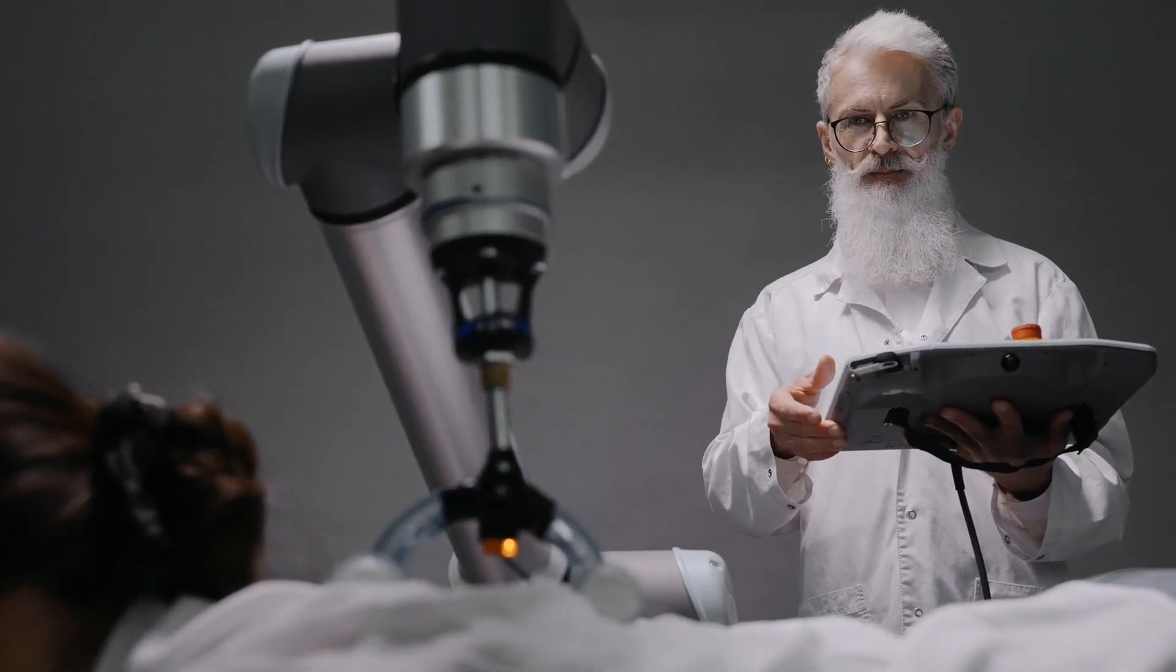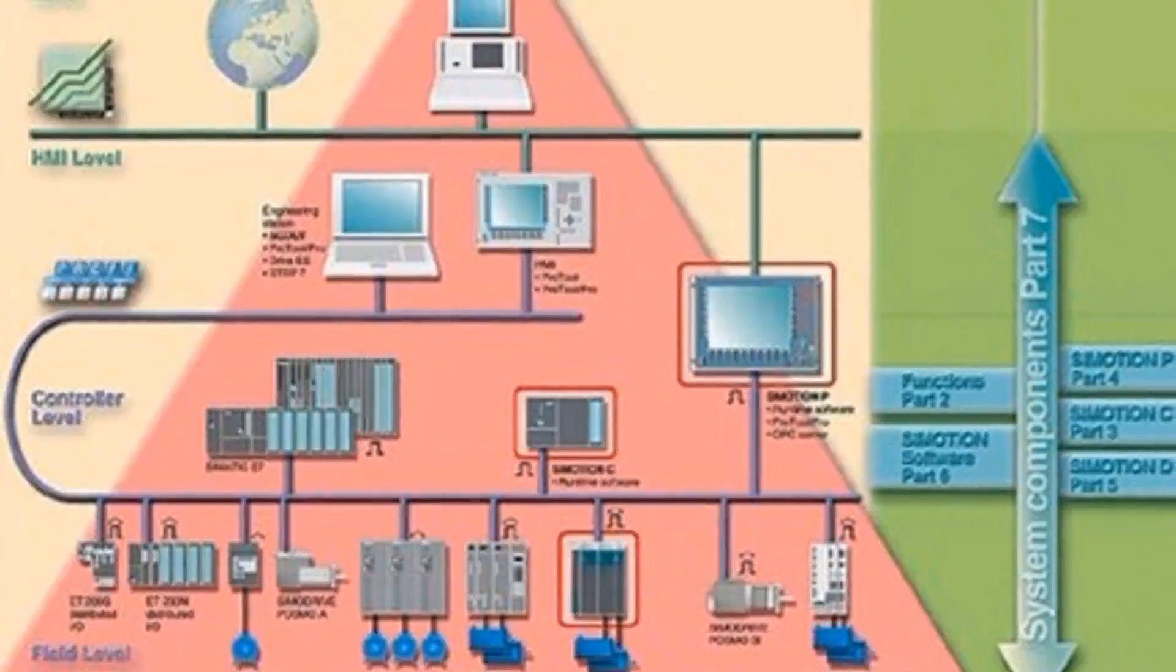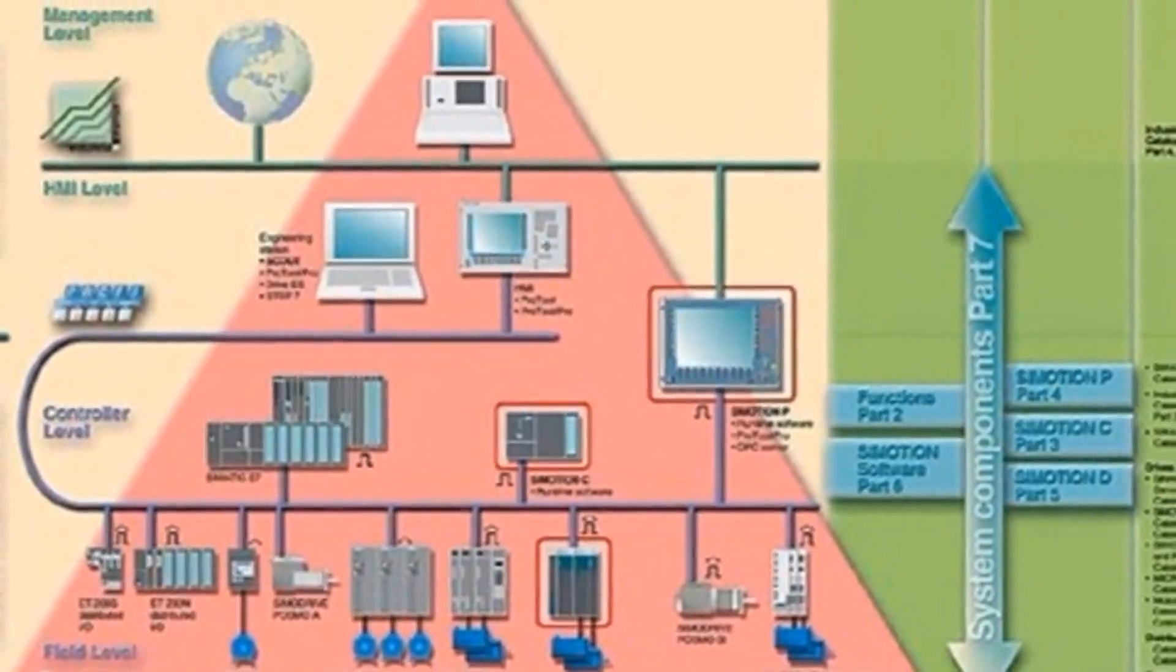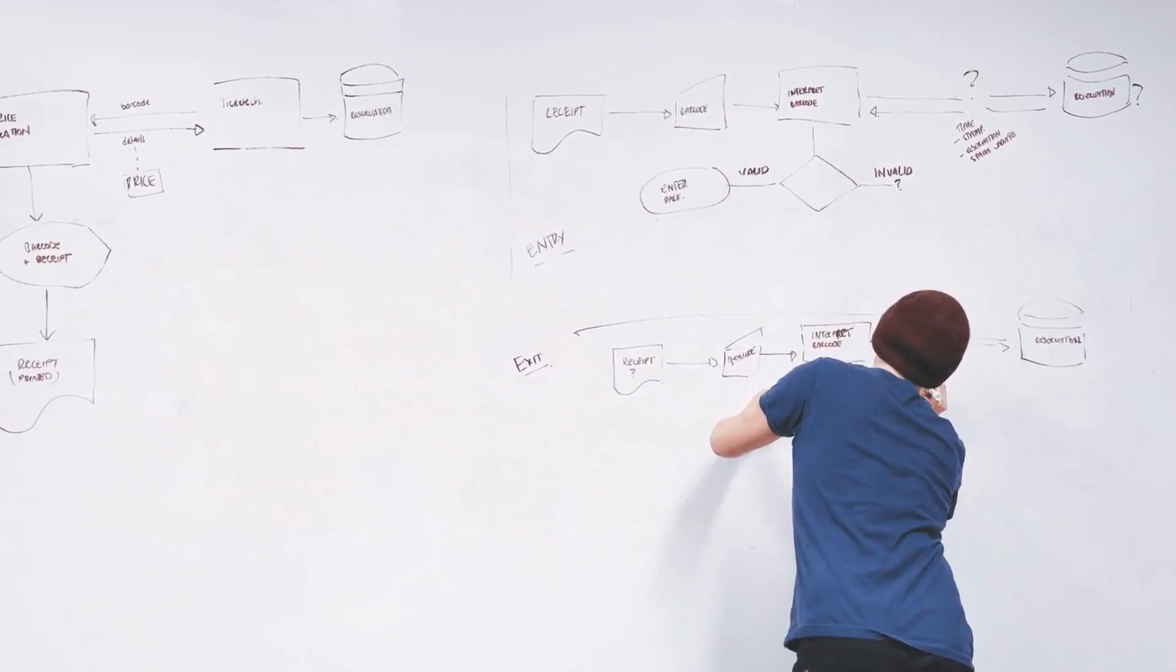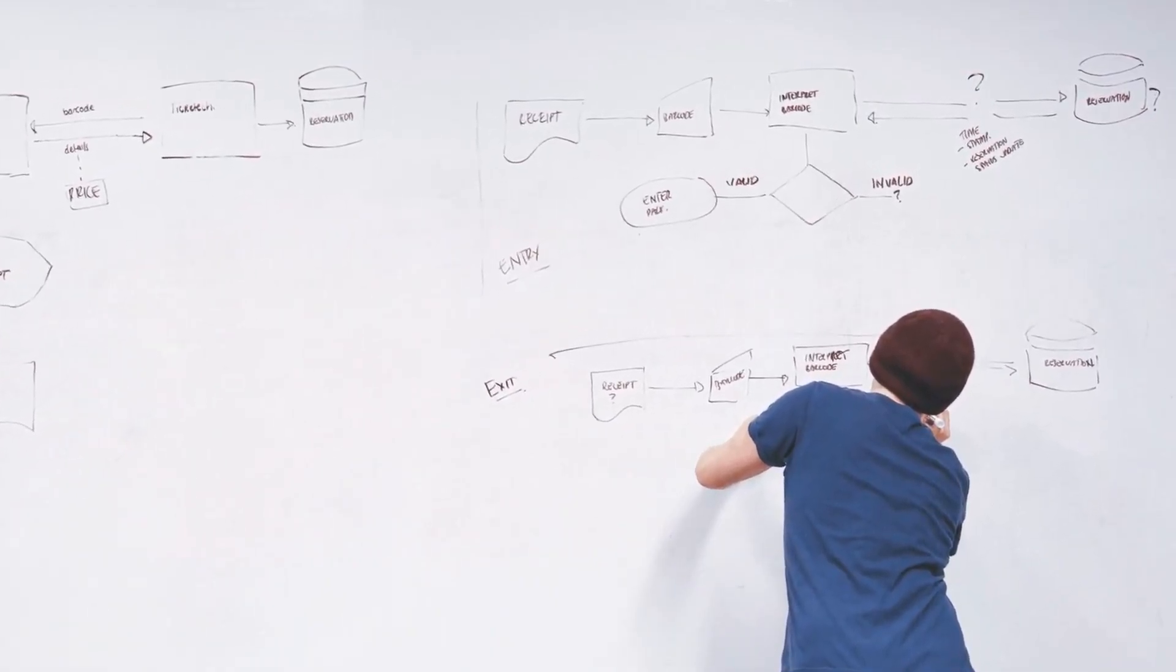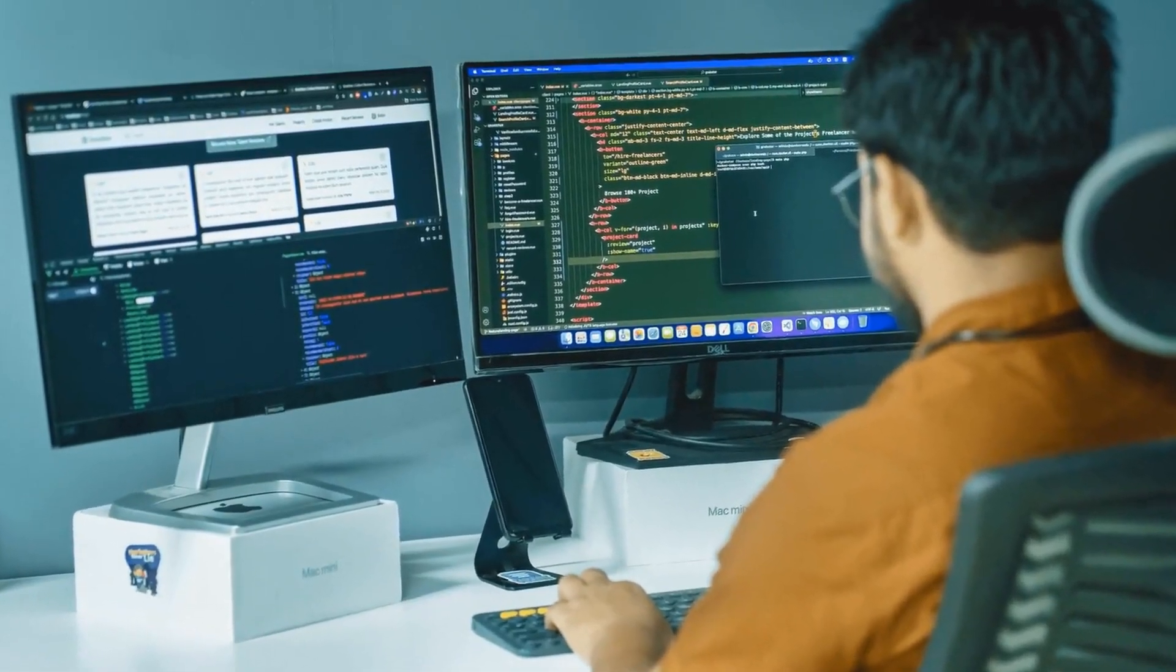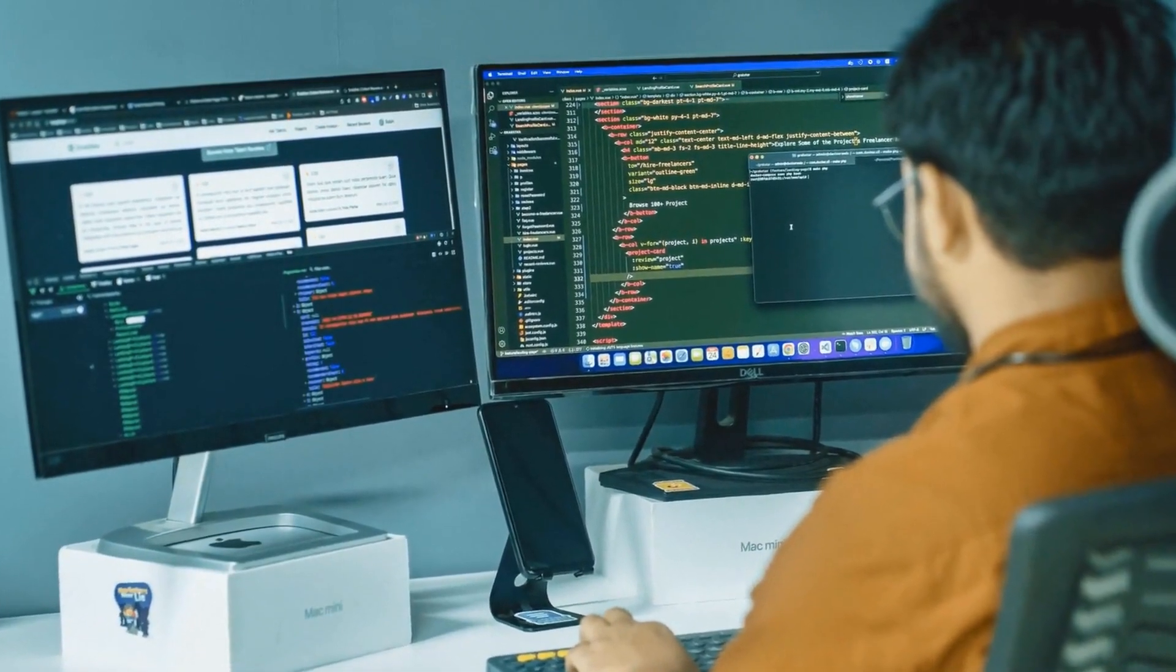Let's recap the five essential steps for PLC programming we've covered today. Step 1: Define the control problem. Clearly identify what you want your PLC to accomplish. Step 2: Create a flowchart or pseudocode. Map out the logic of your program before writing any code. Step 3: Write the PLC program using a suitable programming language like ladder logic or structured text.